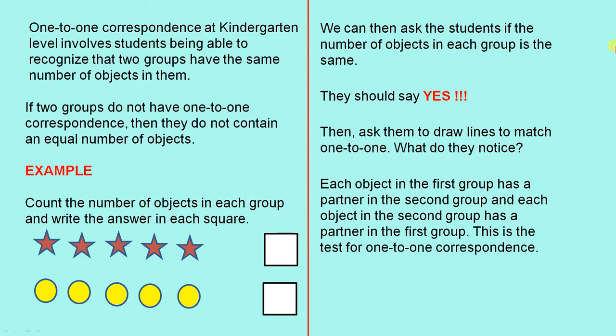One-to-one correspondence at kindergarten level involves students being able to recognize that two groups have the same number of objects in them. If two groups do not have one-to-one correspondence, then they do not contain an equal number of objects.